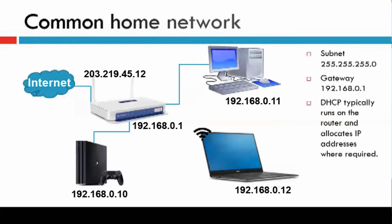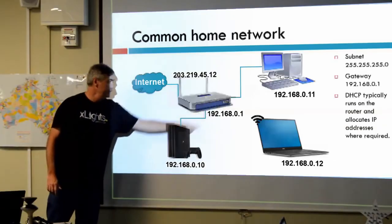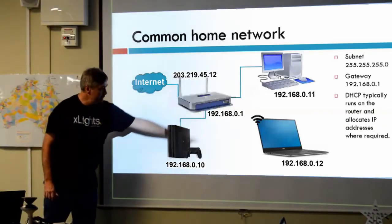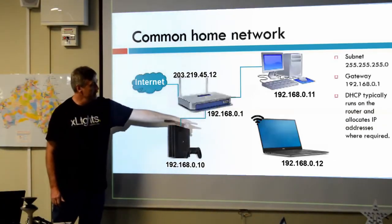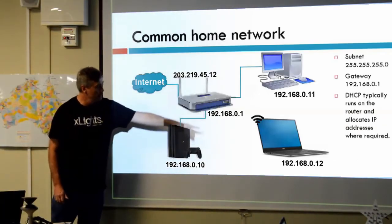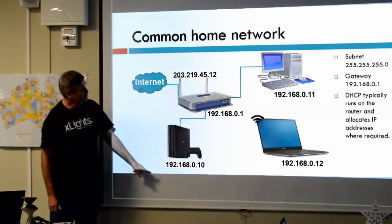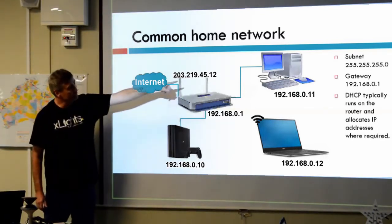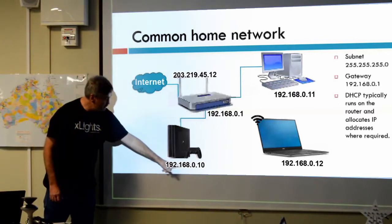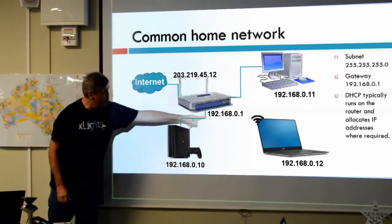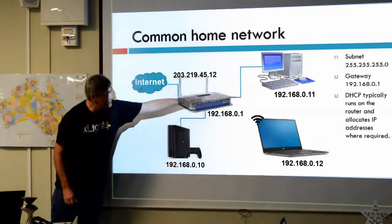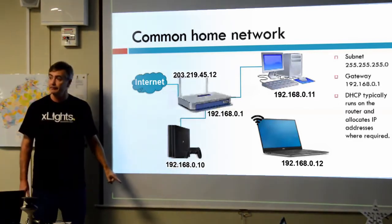A common home network has some sort of Wi-Fi router with an IP address. You might have your PlayStation, a laptop connected via Wi-Fi, et cetera. Notice we're on a 255.255.255.0 network, so the first three numbers on every device internally are exactly the same.